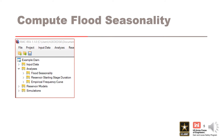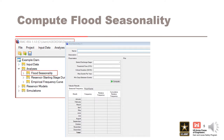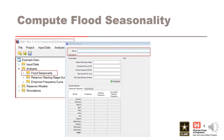I'm going to compute a new flood seasonality analysis using RFA. First, I'll open a new flood seasonality window. I can do this by right-clicking within the project explorer or by selecting Analysis in the file menu and selecting New Flood Seasonality. The empty flood seasonality window opens. Here I can enter the name and description.